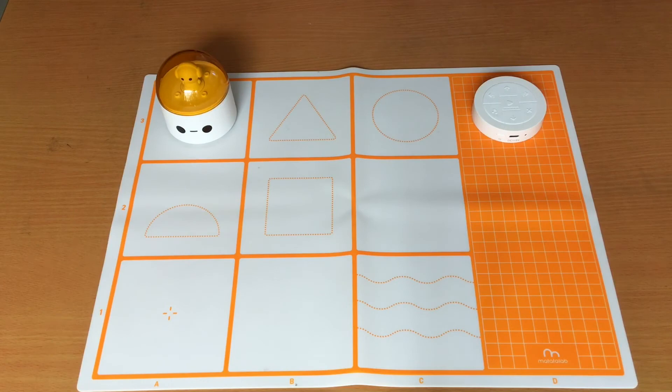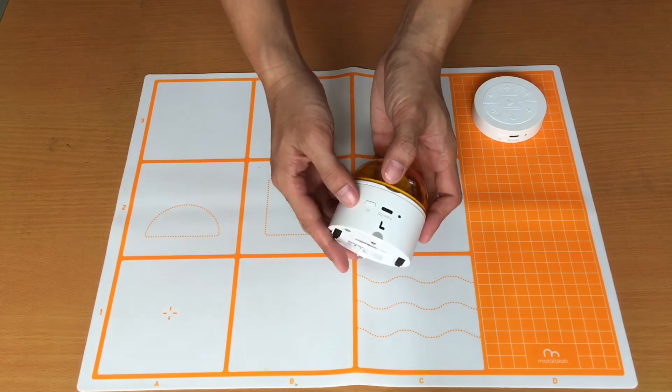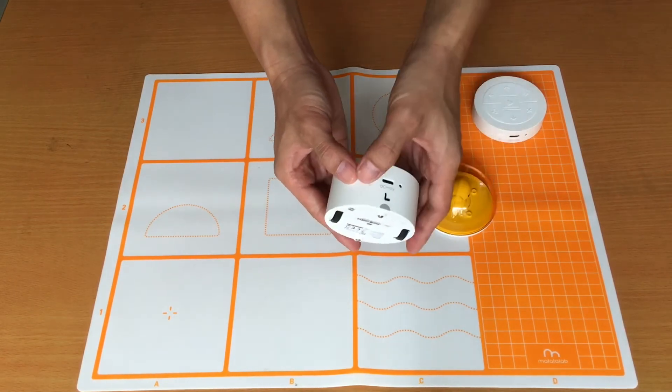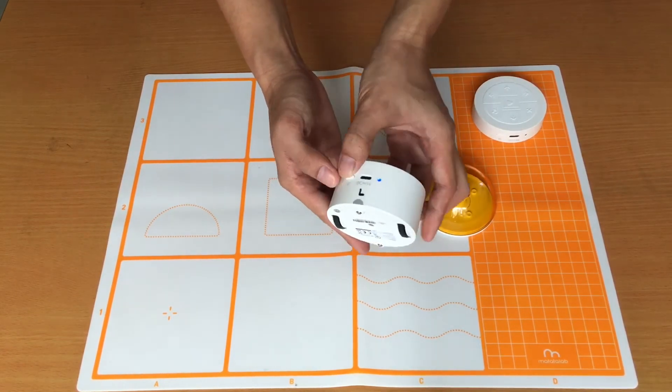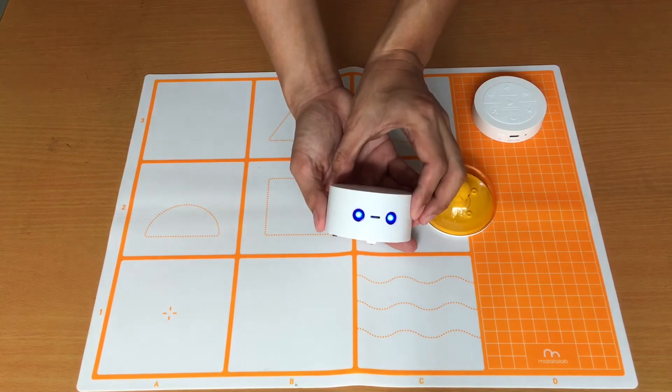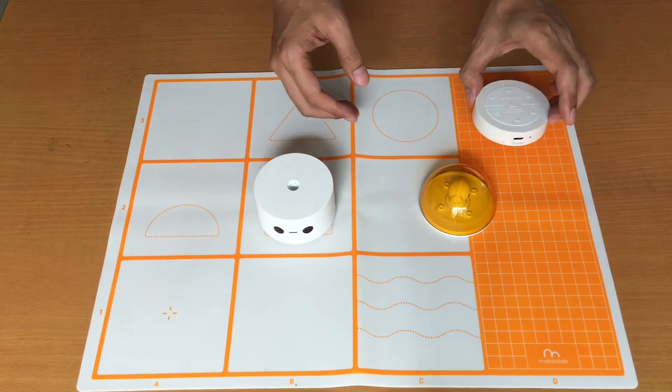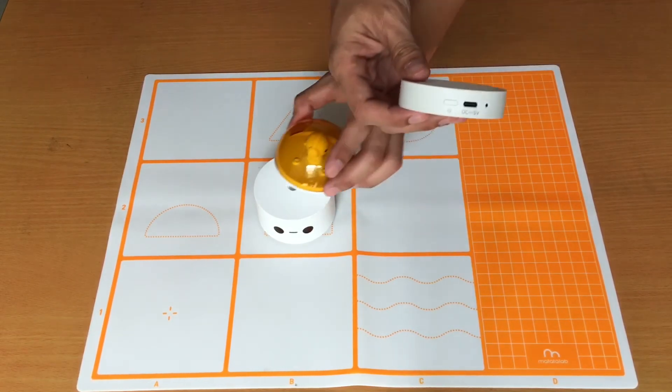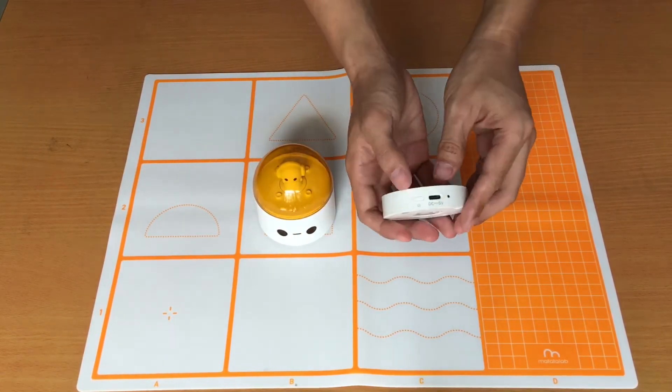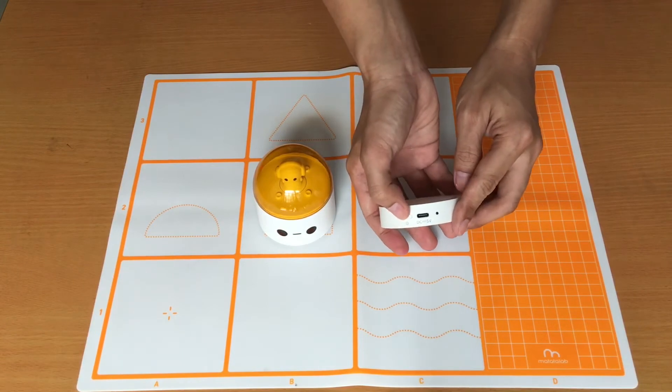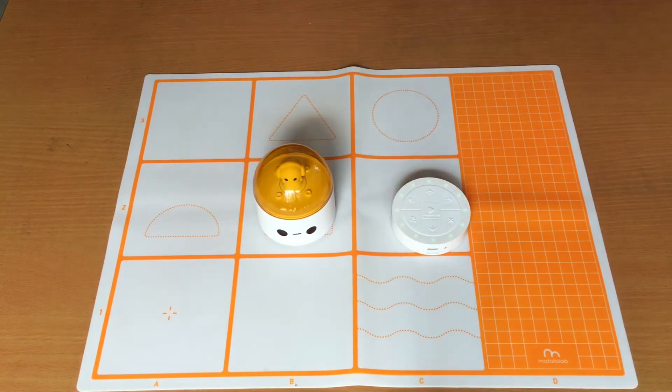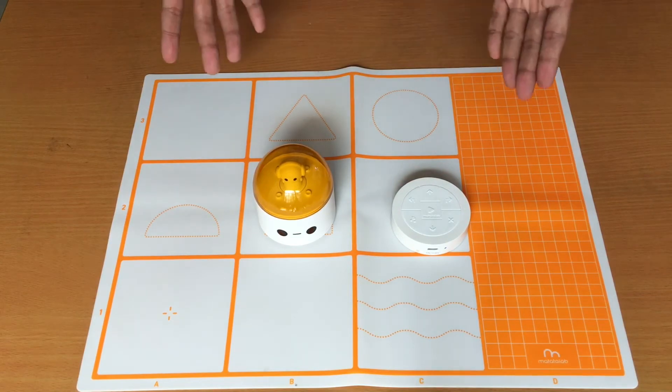So let's now start playing with Matatalabot. Let's turn the power on. And as it turns on, it will begin flashing a blue light on the eyes as it seeks connection to the controller. Once they're connected, the Matatalabot will play a sound. So it means they're now paired and we can now begin playing with the Matatalabot.